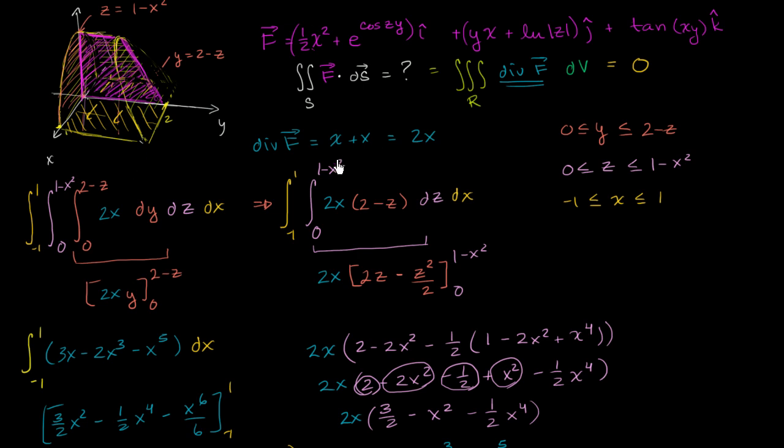Then our entire solution that we did in the last video would have been the exact same, except now x is going to vary between, instead of negative 1 and 1, it'll vary between 0 and 1. And so our bounds of integration, x is going to go between 0 and 1.